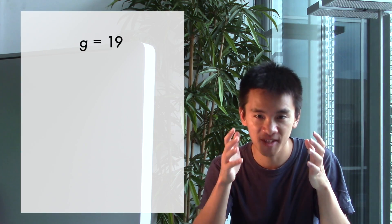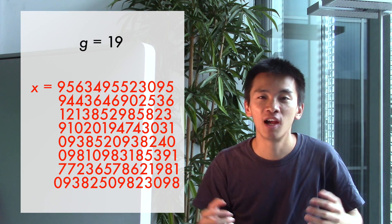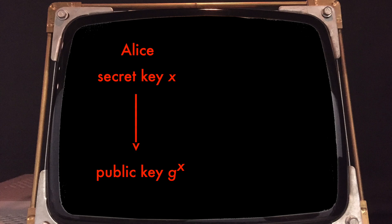Crucially, we demand the secret number X to be huge, like truly, truly huge, like hundreds of digits long. So G to the power X is her public key, and everyone knows her public key. If she publishes her public key, G to the power X, and Bob does the same.